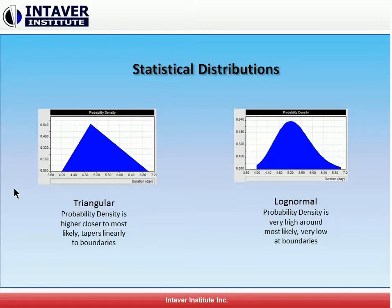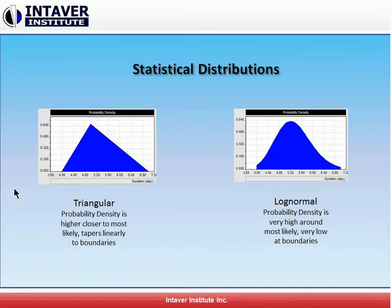Here we can see the triangular and log normal. Characteristically, schedule distributions are right-skewed with longer tails to the right. This is because in schedules, the ability to shorten the duration is limited, whereas there's really no limit to how much they could increase. Theoretically, an activity or a project could go on infinitely.